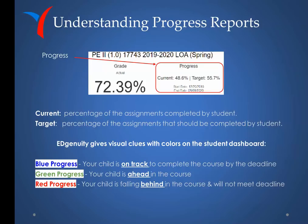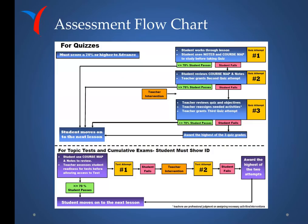Edgenuity gives visual clues with colors on the student dashboard. Blue progress indicates your child is on track to complete the course by the deadline. Green progress indicates your child is ahead in the course. Red progress indicates your child is falling behind and will not meet the deadline.